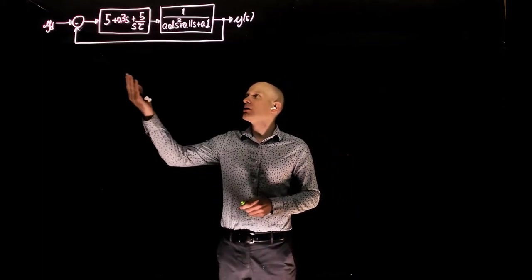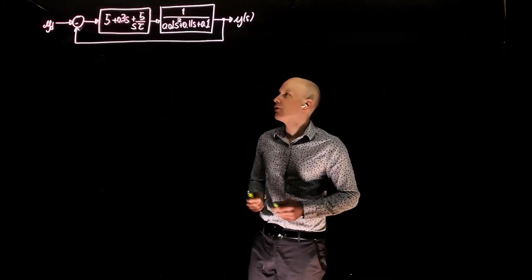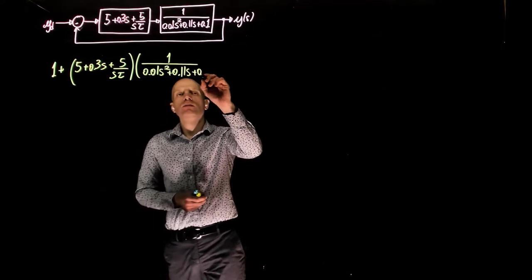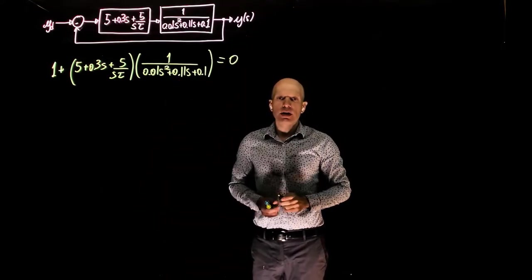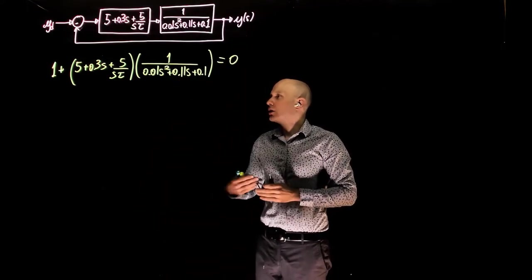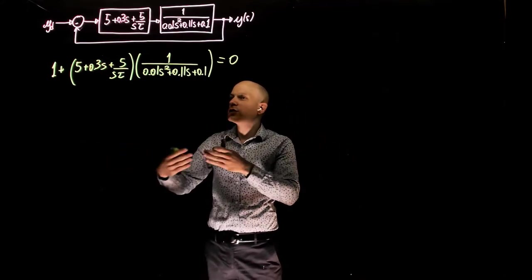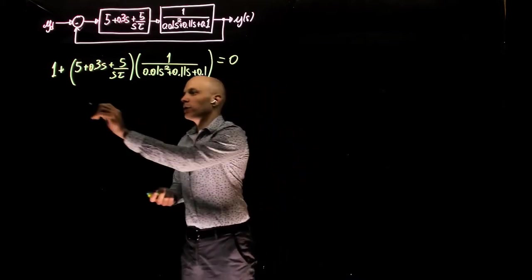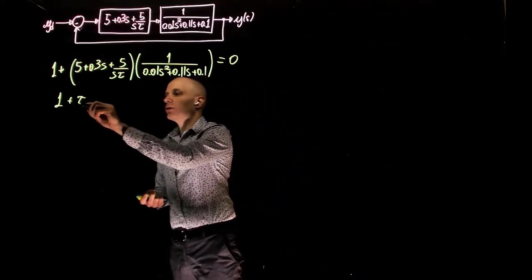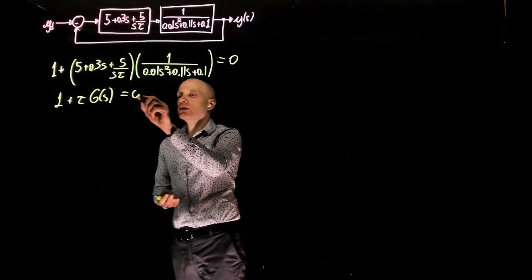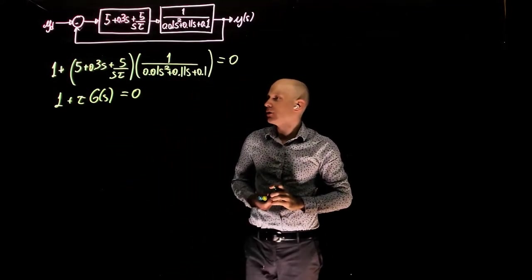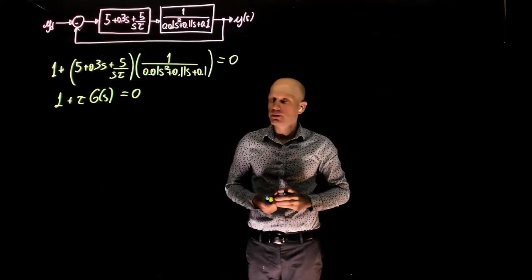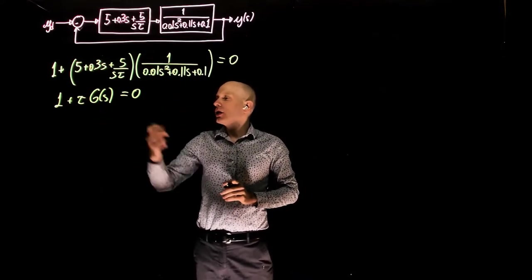The characteristic equation is simply 1 plus the multiplication of these two functions equals zero. Unlike previous exercises on root locus, here the characteristic equation is not in standard form. It needs to be written as 1 plus tau times g(s) equals zero, where g(s) is a function of s and tau is the variable that changes from 0 to infinity. We now need to rearrange this expression into standard form.